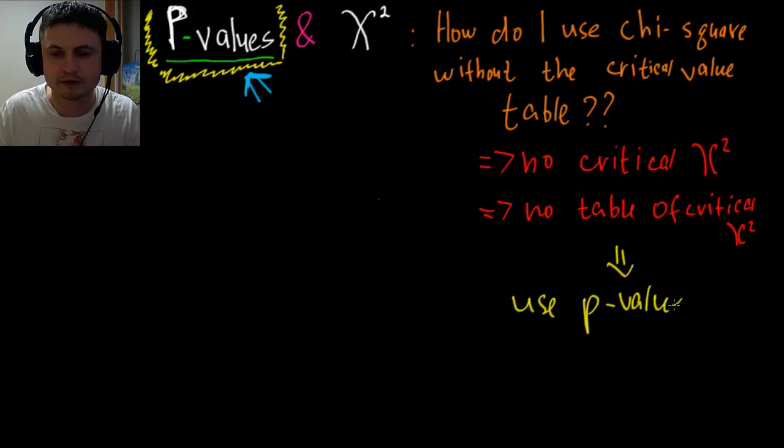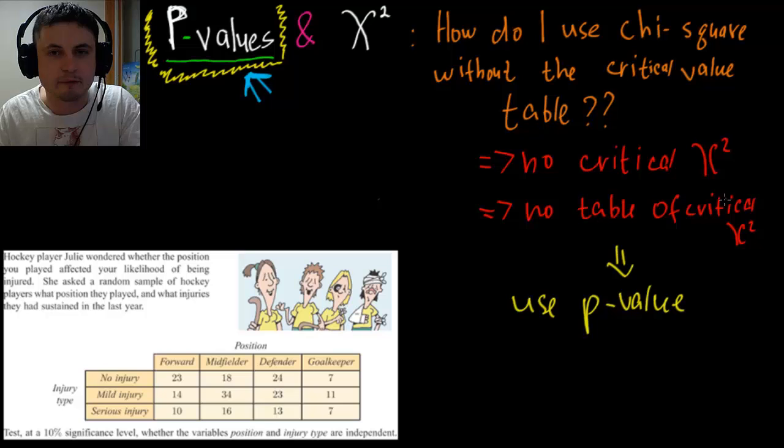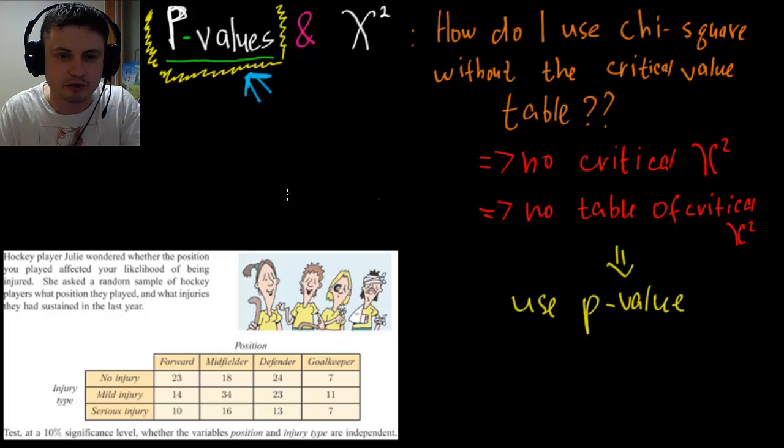So let me just explain to you what it means. We're going to use a question from the book for that. There's a hockey player named Julie who wants to find out if the position of a player in a hockey game affects the likelihood of being injured. So she asks random players and she gets these numbers right here.